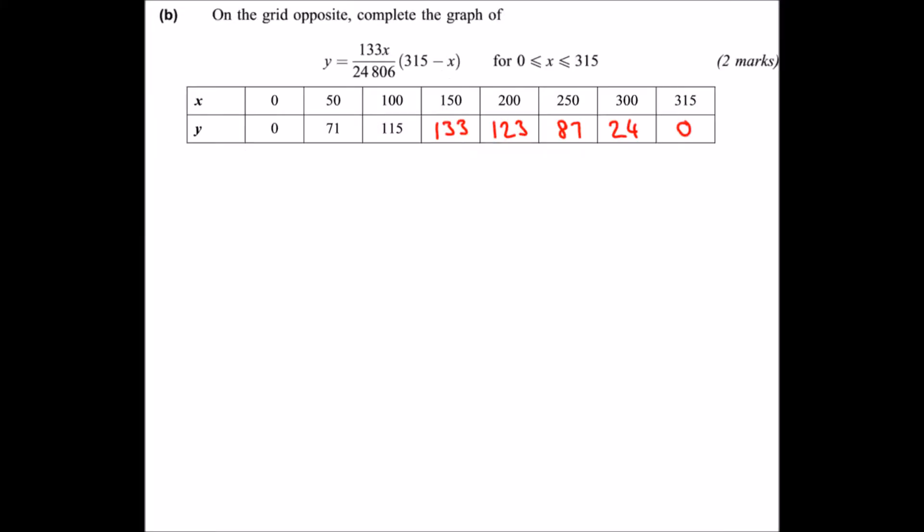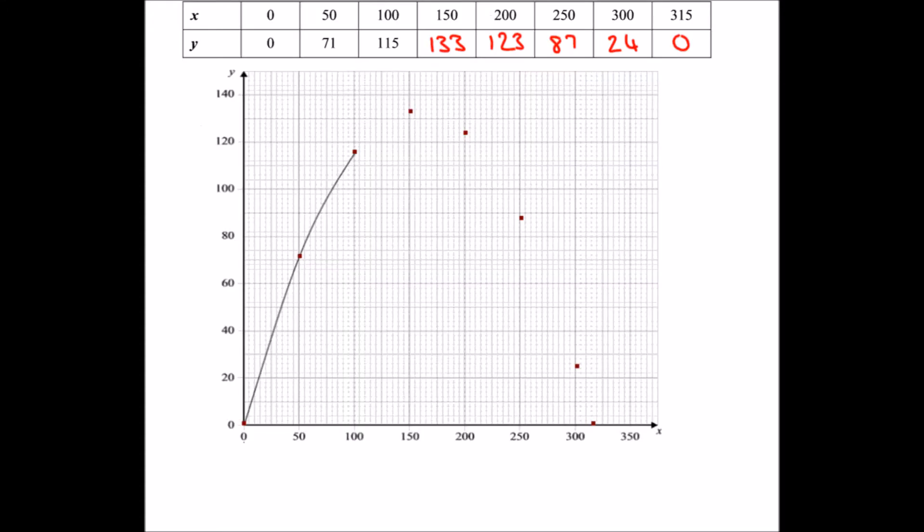Part B says on the grid opposite, complete the graph of, and then we've got the equation we had before. So let's have a look at what this looks like. Here we've got v axes. And you can see I've already put the points in. I've used autograph just to make sure I get them spot on.